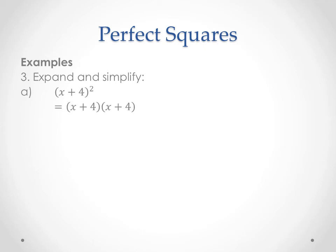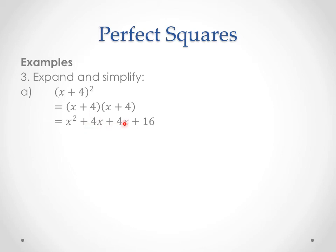Expand and simplify: x plus 4 all squared. Writing it out the long way, we've got x plus 4 times x plus 4. Multiplying each term: x times x is x squared, x times 4 is 4x, 4 times x is 4x also, and 4 times 4 is 16. Combining like terms: the two middle terms are the same, so 4x plus 4x gives us 8x. Our simplified answer is x squared plus 8x plus 16.